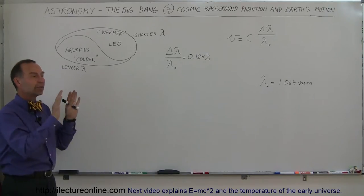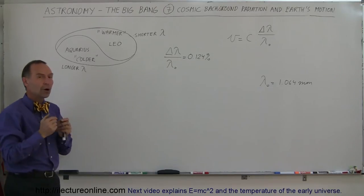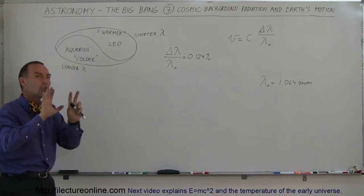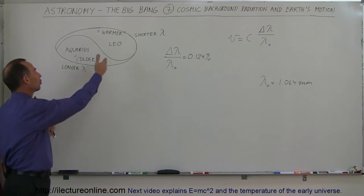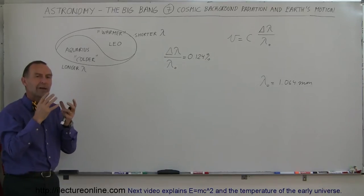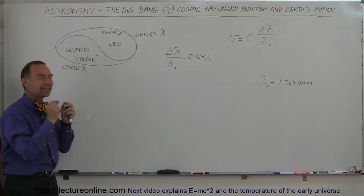When we started looking in the direction of the constellation Leo, we found that the wavelengths were slightly shorter, meaning higher energy, therefore slightly warmer universe. And when we looked towards the constellation Aquarius, we began to see a longer wavelength associated with a slightly cooler temperature. There was a slight difference between them.